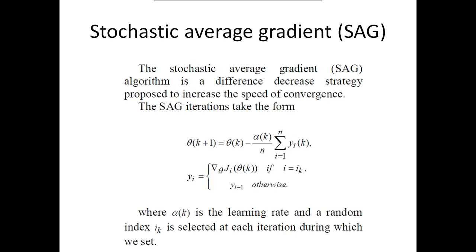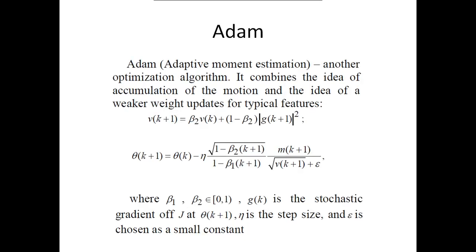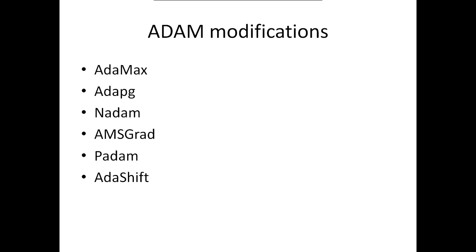We also considered the stochastic average gradient, or SAG, algorithm, whose form is presented at this slide. Also, one of the most popular algorithms is Adam — the adaptive momentum estimation algorithm — presented at this slide. There are a number of different Adam modifications like AdaMax, AdaGrad, NAdam, MSGrad, PAdam, AdaShift, and a number of other algorithms, all of which are considered in detail in our thesis. We presented a comparative analysis of these algorithms.